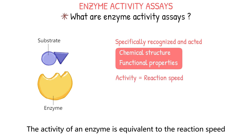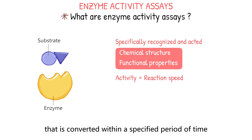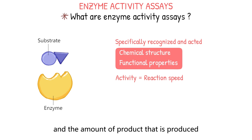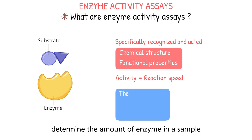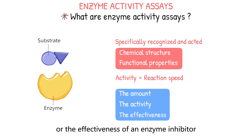The substrate is chosen based on its chemical structure and functional properties, which determine its ability to be transformed or processed by the enzyme. The activity of an enzyme is equivalent to the reaction speed. It is defined by the amount of substrate that is converted within a specific period of time and the amount of product that is produced, respectively. Enzyme activity assays can be used to determine the amount of enzyme in a sample, the activity of an enzyme, and the effectiveness of an enzyme inhibitor.